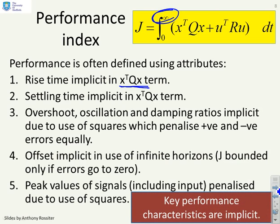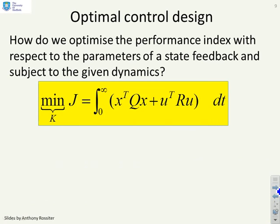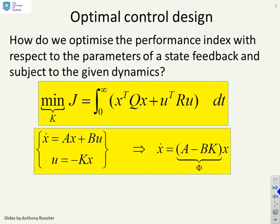Here's the key thing: this performance index J that we've chosen implicitly covers the sorts of attributes that we might be interested in and therefore is a good measure of performance. So the next question is, how do we optimize this performance index with respect to the parameters of a state feedback and subject to the given dynamics?